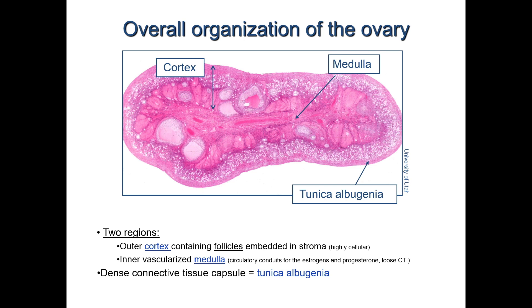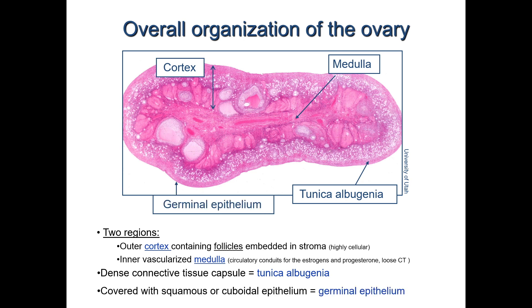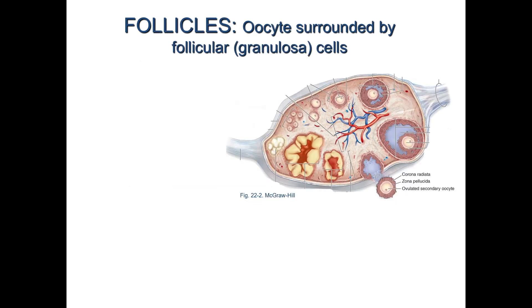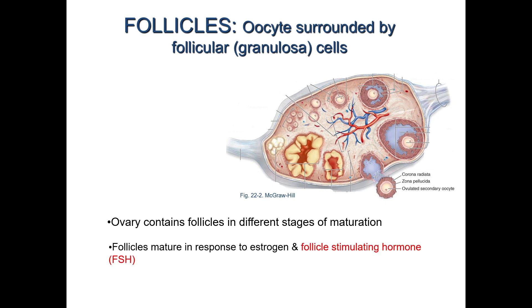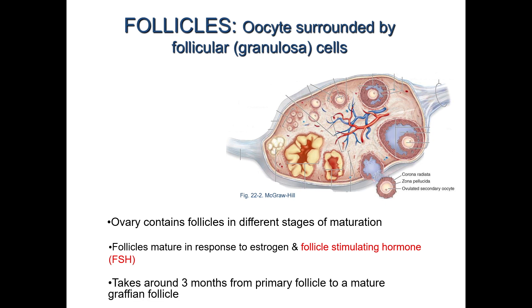Each ovary is surrounded by a dense connective tissue capsule called the tunica albuginea, covered with a simple cuboidal epithelium called the germinal epithelium. The follicle is the structural and functional unit of the ovary, each consisting of a single oocyte surrounded by one or more layers of follicular or granulosa cells which produce the sex hormones. Each ovarian cortex contains follicles in different stages of maturation that mature in response to estrogen and follicle stimulating hormone from the anterior pituitary, a process taking approximately three months.